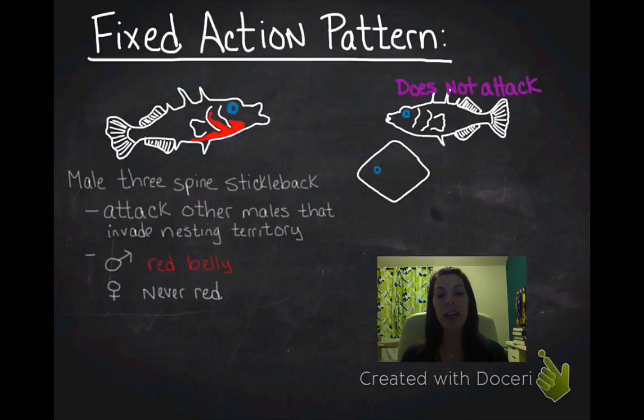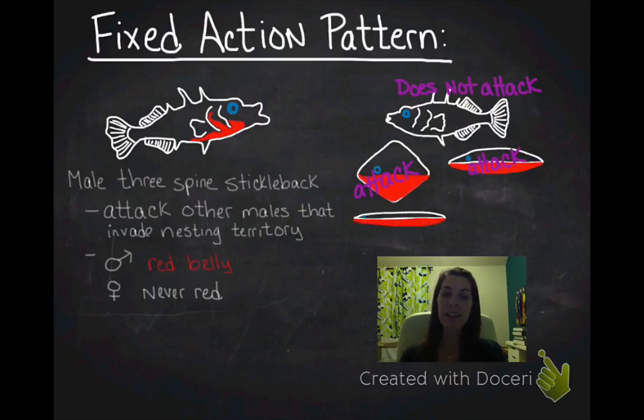In addition to that, they found that if you take other decoys that aren't really shaped like fish, that are shaped kind of randomly, so that one's just a diamond, the stickleback will in fact attack that. And it will attack one that looks like this or one that looks like this. It doesn't really matter what the shape is. What it's attacking is the presence or the absence of the red. In fact, they actually noticed that they would actually kind of try and attack the outside of the glass if there was something red on the outside of the tank.